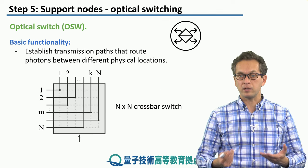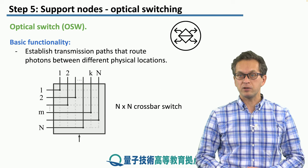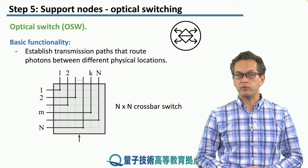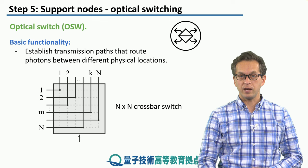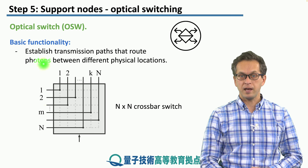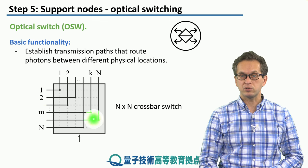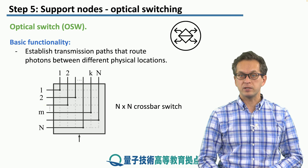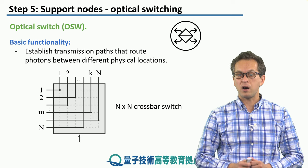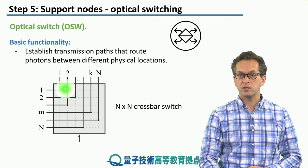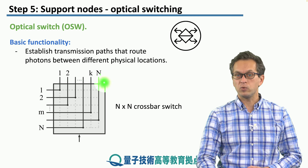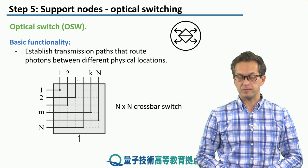We can keep increasing the complexity and reach the full N-by-N crossbar switch. This is where we have N input ports, N output ports, and a control that determines how each individual input port is connected to which individual output port.